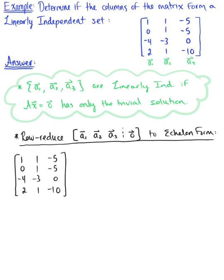We want to take the first pivot and use it to eliminate the entries below it. We'll need two steps: 4 times the first row plus the third row to get the new reduced third row, and negative 2 times the first row plus the fourth row to get the new reduced fourth row.